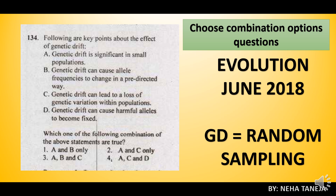Let's go again — combination questions are important. Moving to Evolution, 2018, Section C, on Genetic Drift. You know that when we study evolution, we study evolutionary forces. Genetic Drift is very important. With combination questions, you will see it is very easy — all of the things we study in Genetic Drift.